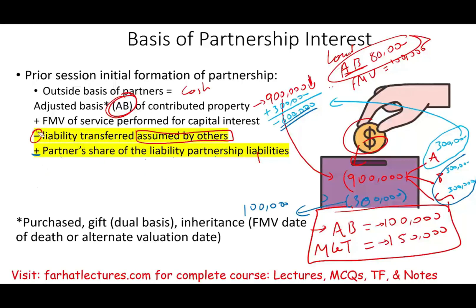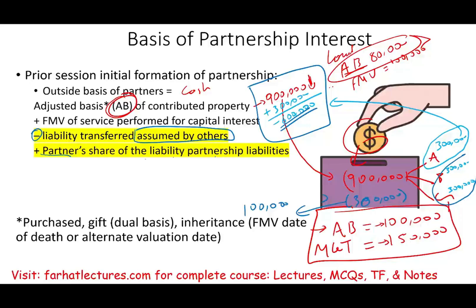You have to be comfortable with this. You contributed the liability, so you reduce your basis by the liability transferred assumed by others. But if others contributed a liability, you add your share of that liability, because as a partner you are responsible for it. Here we're assuming we're dealing with non-recourse debt, which we'll define later. Remember, there's no gain or loss when we form a partnership.